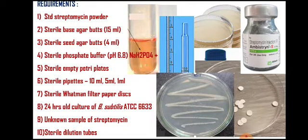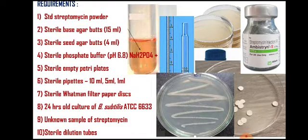The protocol begins with preparation of a standard graph. This graph has two axes: one for concentration of streptomycin and another for inhibition zone diameter. To generate the graph, we first prepare dilutions. For this, we need a stock of streptomycin antibiotic. The stock concentration should be 200 micrograms per ml — note that the slide shows an error; write 200 µg/ml in your notebook.